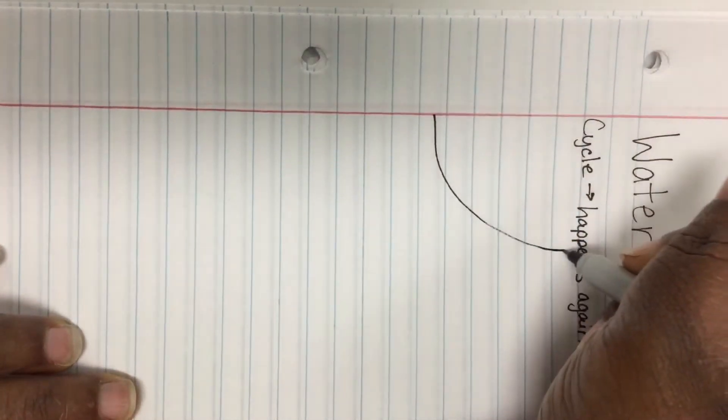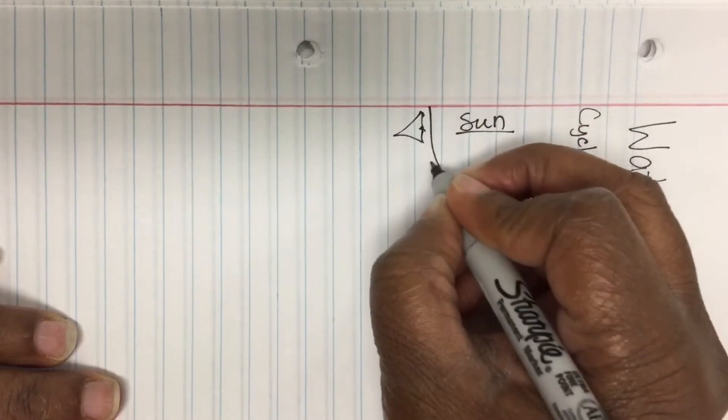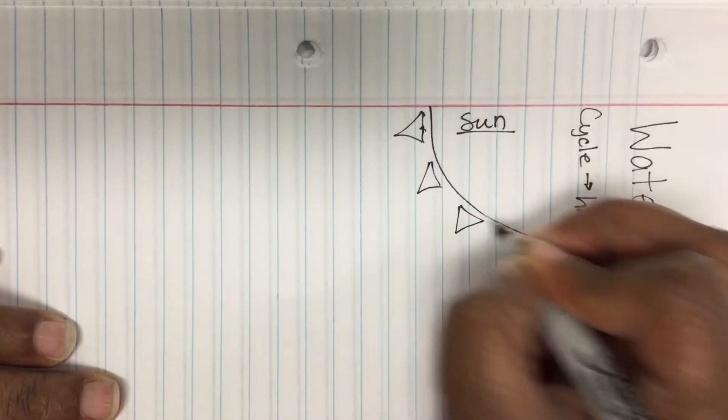I've turned my paper sideways. I don't want to draw over the words, be mindful of that. I'll go ahead and make a sun here. In order to start the cycle, we need the energy from the sun that's going to heat up our water.